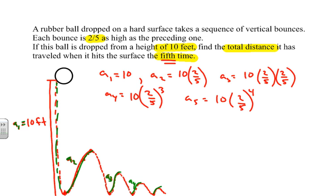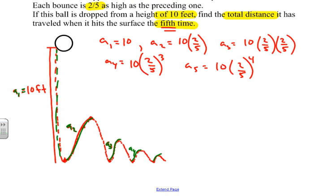Each time it hits the ground, you might think this is a geometric series, but we're using these distances twice - going up and down. Each one represents a distance. We're finding the sum of this geometric sequence starting with these five terms.